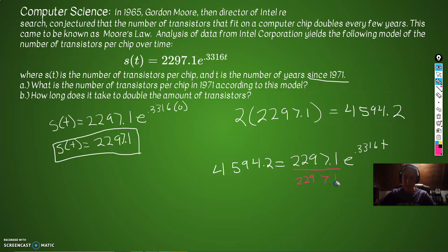So 2297.1 divided by 2297.1. This better come out to 2 because it's the double. So E to the 0.3316T. Let's do our bestest friend and LN both sides. So we'll have LN of 2 equal 0.3316T. Divide both sides by 0.3316. So we'll get T equal to LN of 2 over 0.3316. LN of 2 divided by 0.3316, that gives us 2.1, I'm going to call it. So in 2.1 years, it will double the transistor. So after 2 years, we will double.